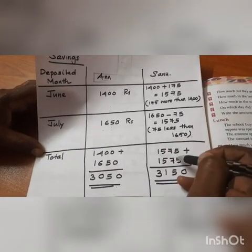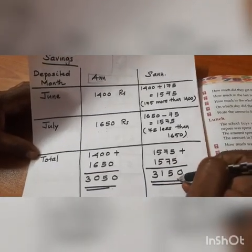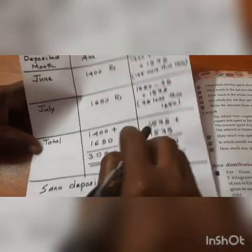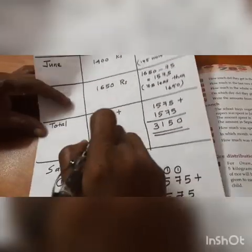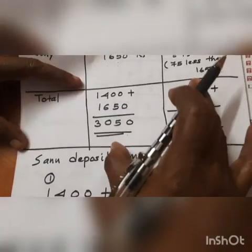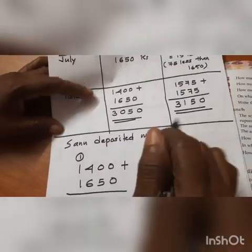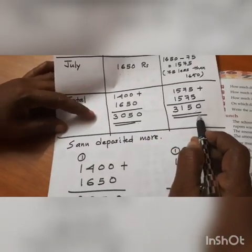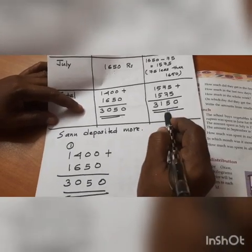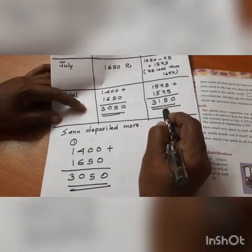Sanu's total amount is equal to 3150. So we find the total of each Anu and Sanu and who deposited more. Sanu deposited more — that difference is 100 rupees.